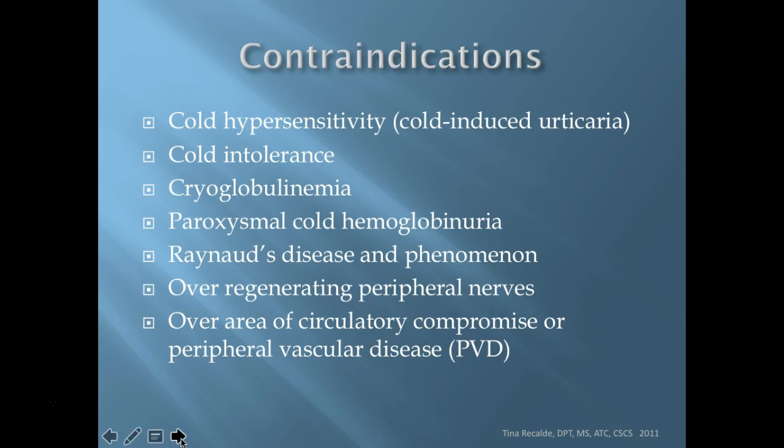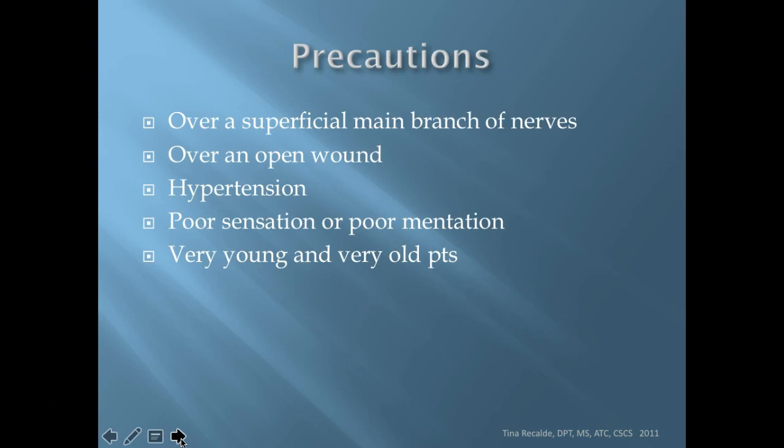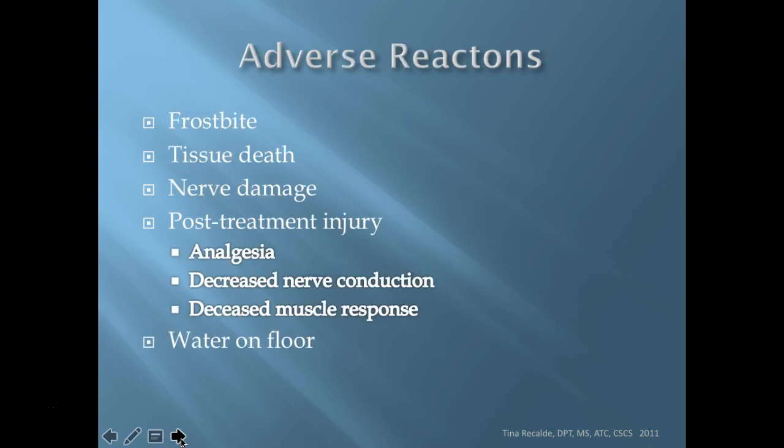Also contraindicated over areas of circulatory compromise or peripheral vascular disease where you don't want decreased blood flow. Precautions include: over a superficial main branch of a nerve, over an open wound, hypertension, poor sensation, or poor mentation - you'll see this as a precaution for almost every modality, and often I use it as a contraindication unless I or someone else can monitor the patient closely. Also precaution for very young and very old patients due to skin sensitivity and their reduced ability to report if it's too cold.